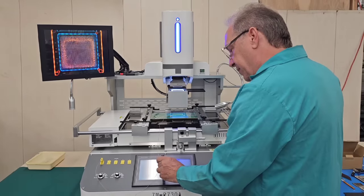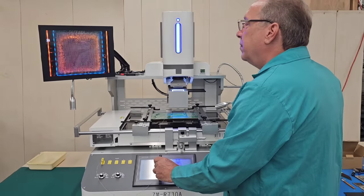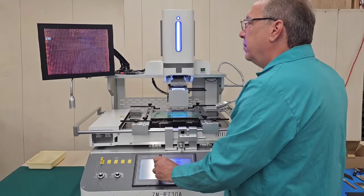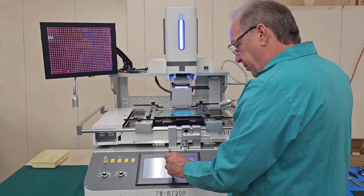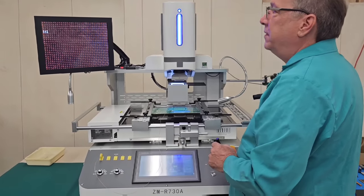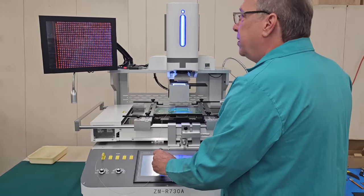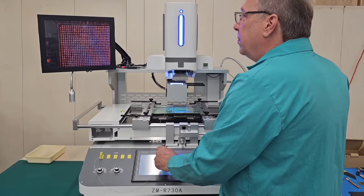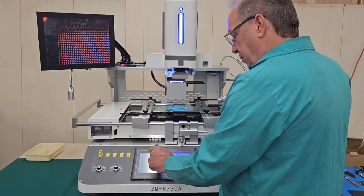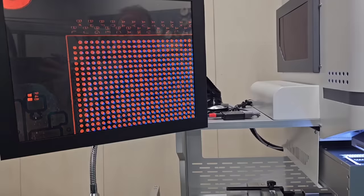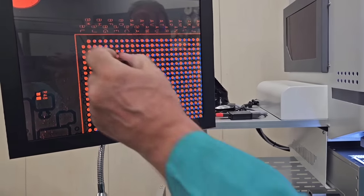What we're going to do, we're going to zoom in a bit. Then we're going to go to the upper right corner and line up the balls and pads on the upper right corner. Okay, so we're going to adjust the yellow light for the BGA pads.